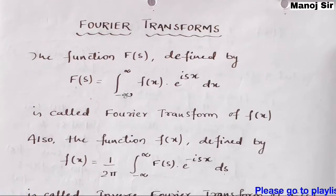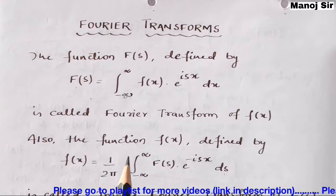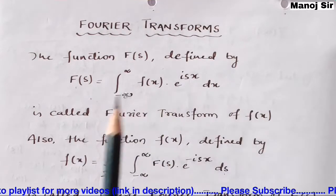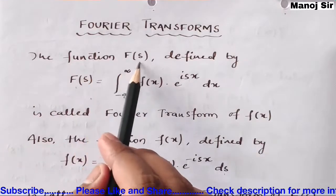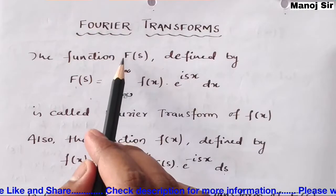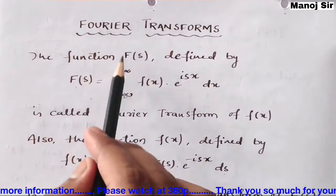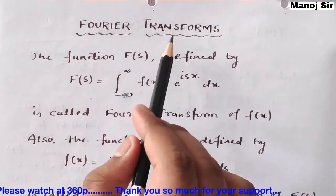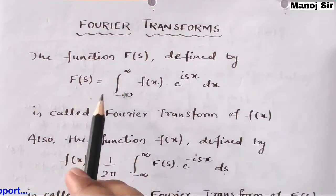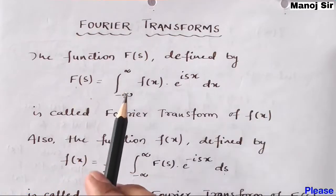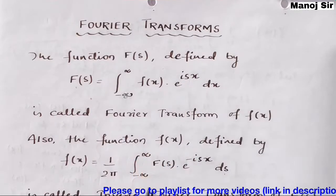Let us start with the topic: Fourier transform. Let's say you have a function f of x and you need to find the Fourier transform for the function f of x. The Fourier transform F of s is defined by: F(s) equals integration from minus infinity to plus infinity of f(x) times e to the power i·s·x dx.